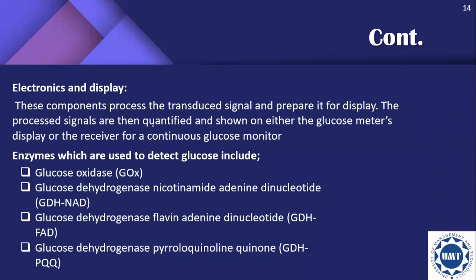The processed signals are quantified and shown on either the glucose meter's display or the receiver for a continuous glucose monitor. Enzymes used to detect glucose include glucose oxidase, glucose hydrogenase, and nicotinamide adenine dinucleotide, among many other specific enzymes.